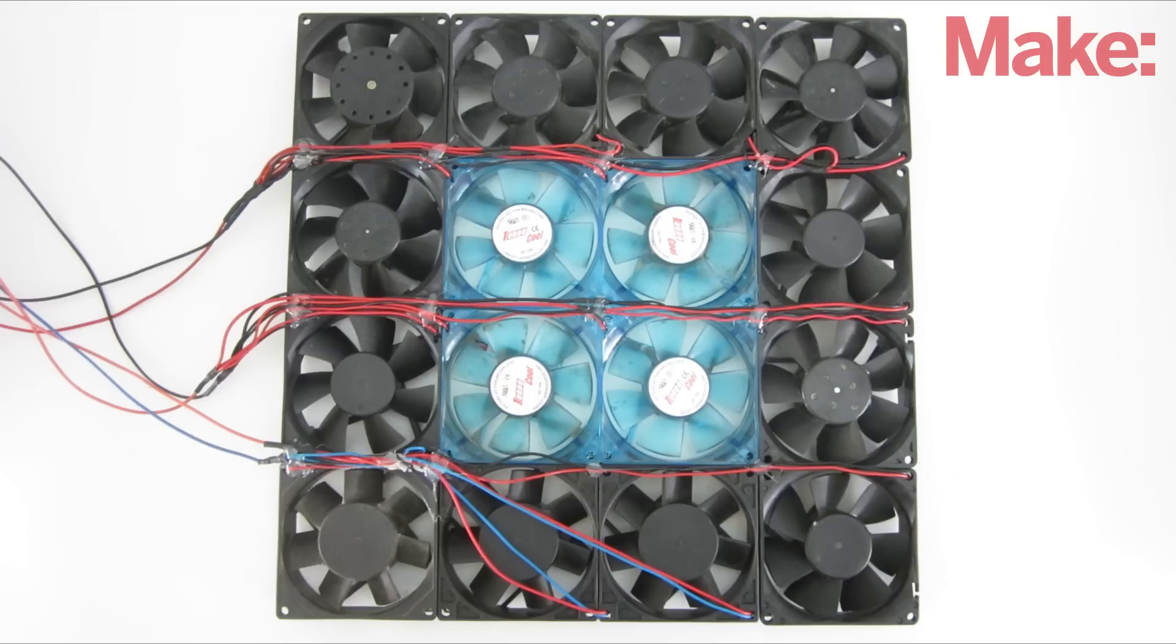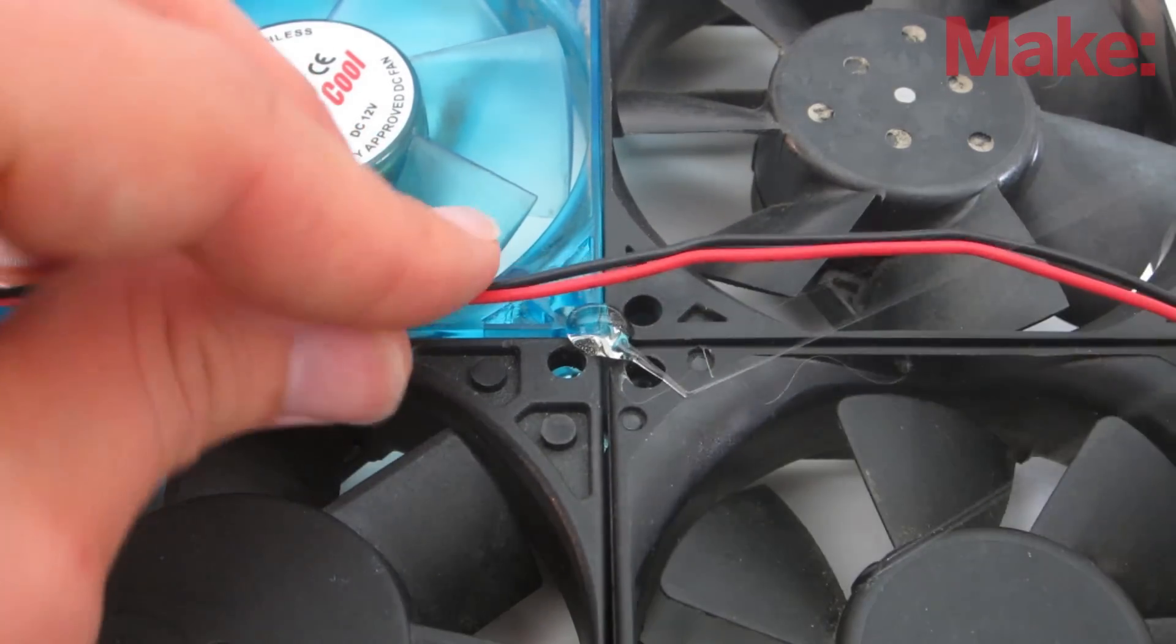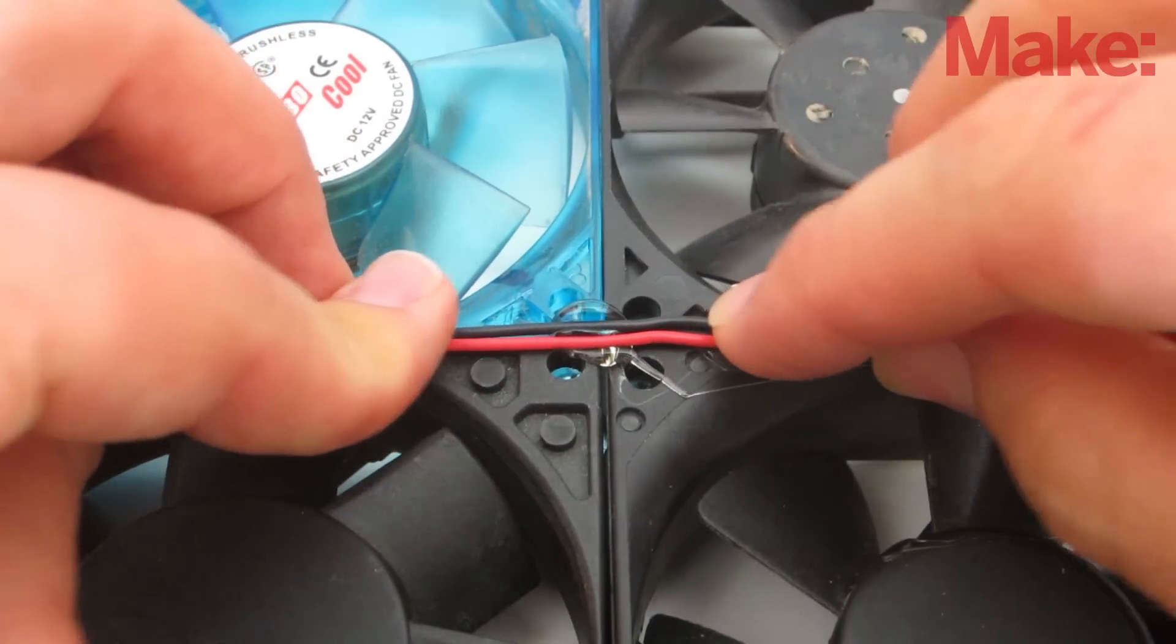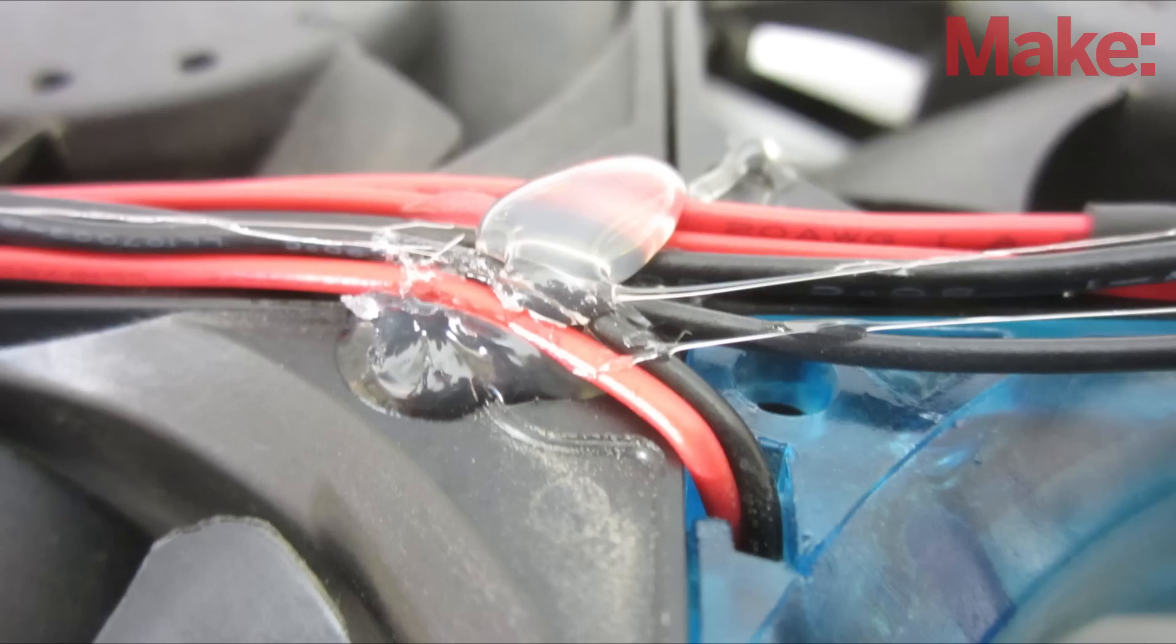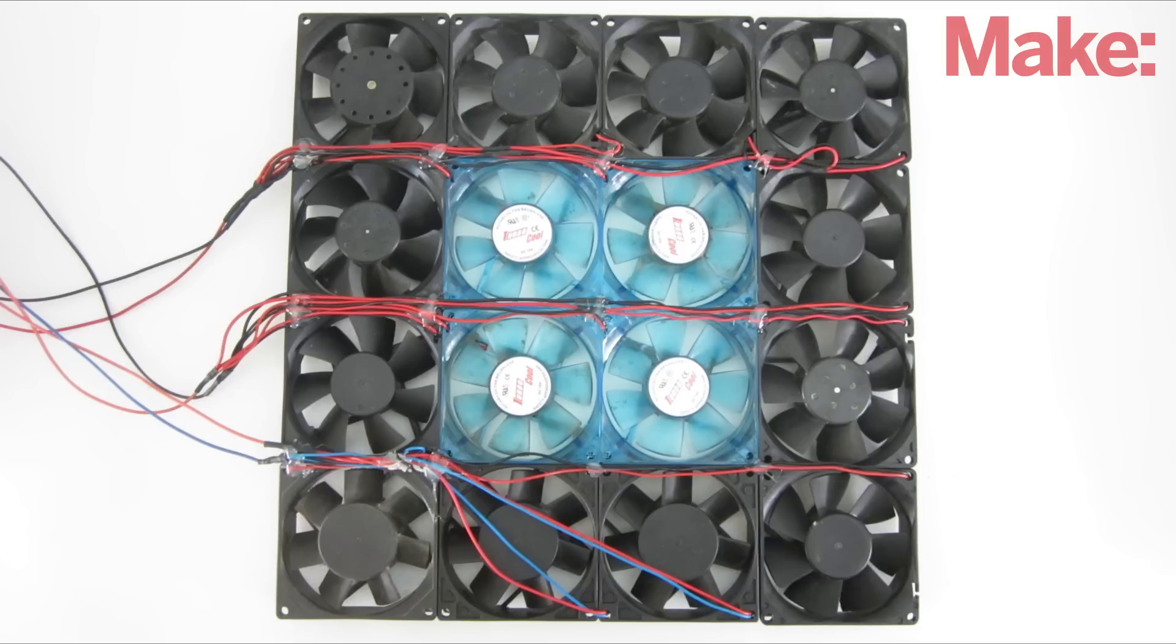The last step is to glue down the wires so that they aren't hanging loose. With each section, place a small drop of hot glue in the corner of the fan, then pull the wires tight and stick them down onto the glue. For larger bundles, you may want to add more glue on top to help hold them in place. Be careful to keep the wires away from the fan blades.